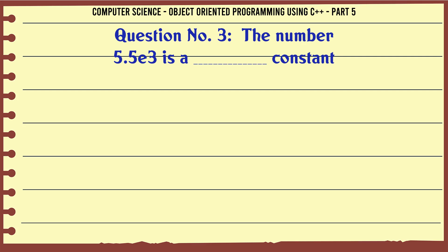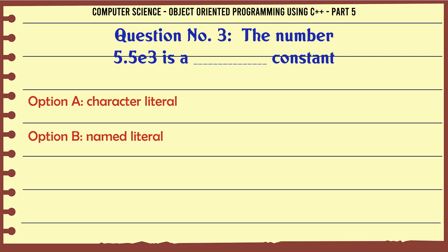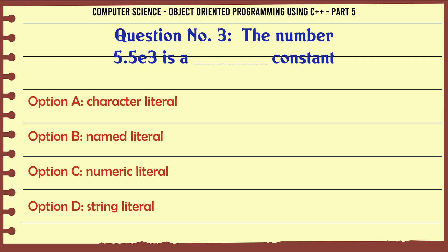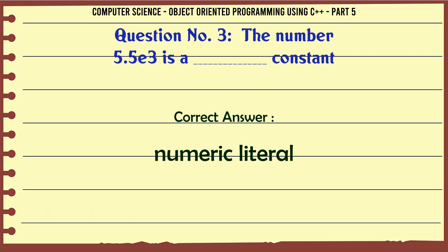The number 5.5b3 is a constant. A. Character literal. B. Named literal. C. Numeric literal. D. String literal. The correct answer is: Numeric literal.